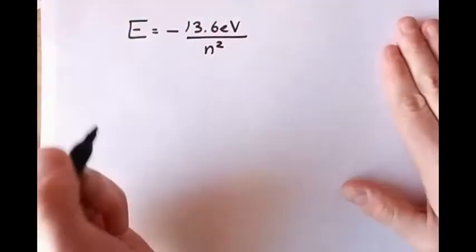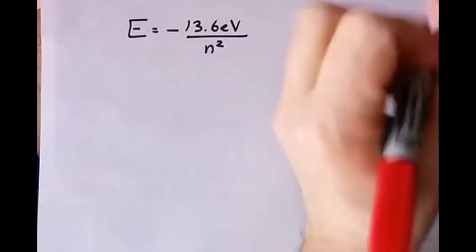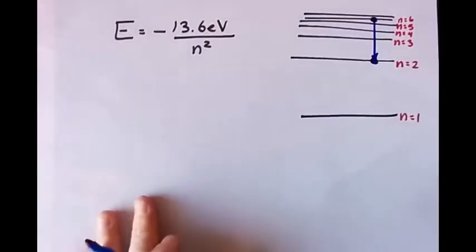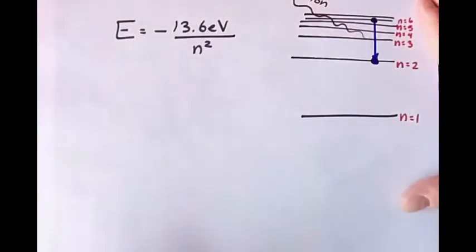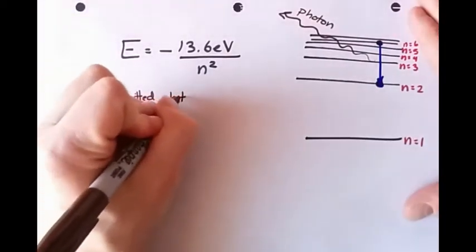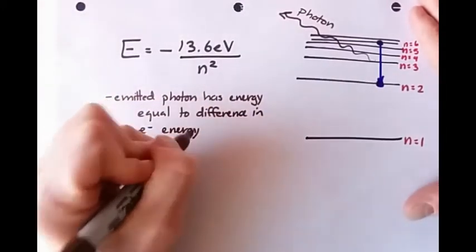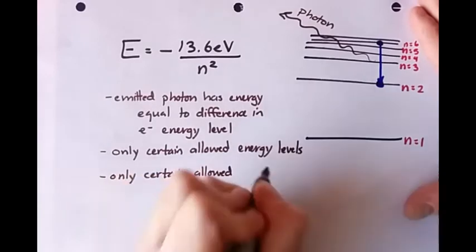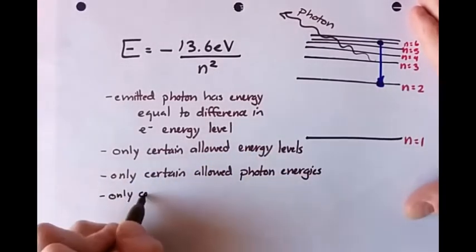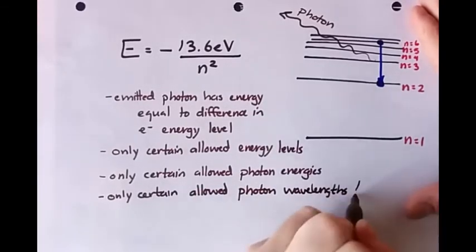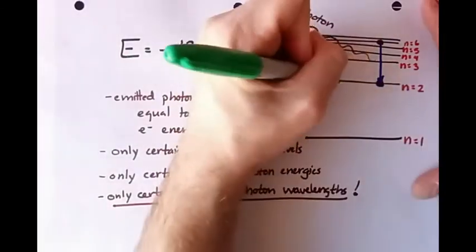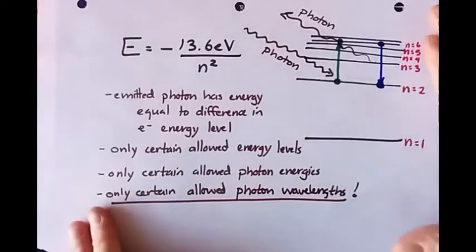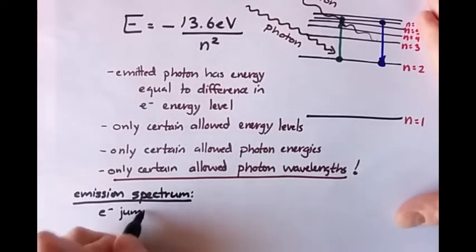This also explains the emission and absorption spectra. For an emission spectrum, imagine an electron leaping from an energy corresponding to n equals 6 down to n equals 2. It will emit a photon of energy equal to that difference in energy levels — so only a very specific energy photon, meaning only a very specific frequency photon, will be emitted. Every line in the emission spectrum corresponds to a specific leap between two allowed energy levels. The absorption spectrum is just the reverse — a leap between two allowed energy levels in the opposite direction, because the photon is being absorbed.